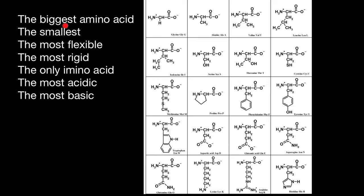The next question: which one is the smallest? It is much easier — it is glycine. Here is the backbone, which is the same in every amino acid, and the R group here is only hydrogen. Because this R group is so small, glycine is also going to be the most flexible amino acid.